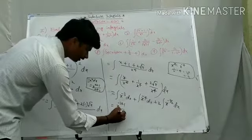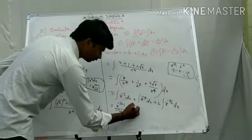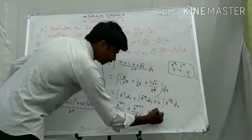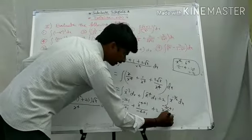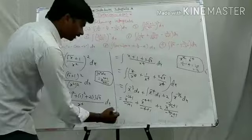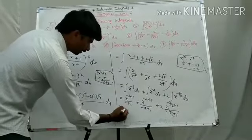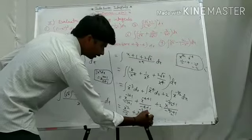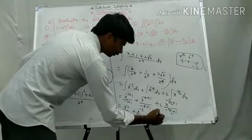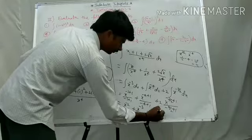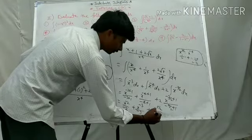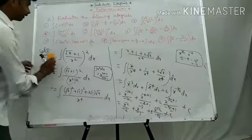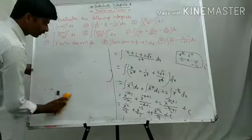Applying the power rule: x to the power (minus 3 plus 1) by (minus 3 plus 1) plus x to the power (minus 4 plus 1) by (minus 4 plus 1) plus 2 times x to the power (minus 7 by 2 plus 1) by (minus 7 by 2 plus 1) plus c.